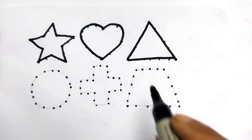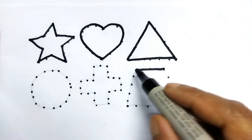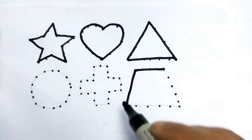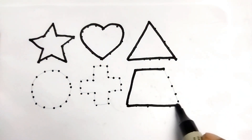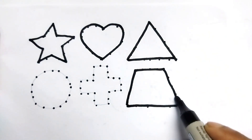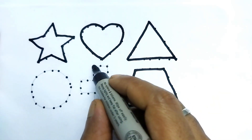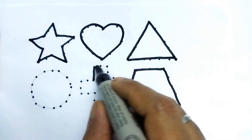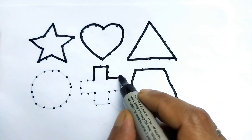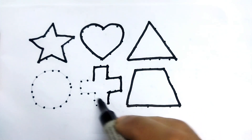This is a triangle. This is a trapezoid. This is a cross — cross shape.